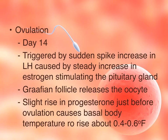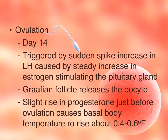A slight rise in progesterone causes a slight rise in temperature of about 0.4 to 0.6 degrees Fahrenheit. Ovulation is also the most fertile time for a female. Measuring body temperature can give a woman an indication of when they are ovulating, since it can differ in each female.